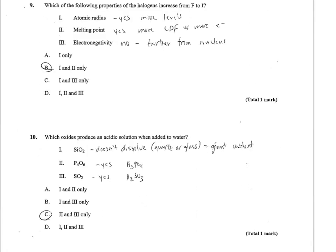Number 9 asks, which of the following properties of the halogens increase from fluorine to iodine? This is group 7A, our smallest, most reactive nonmetals, with fluorine being the smallest in the upper right, and then energy levels being added. Atomic radius, yes, that does increase as you move down any family. Melting point, yes, for nonmetals, it increases as more electrons are available for London dispersion forces. Electronegativity, no, that would decrease as the size increases. There will be less attraction by the nucleus for a shared pair. So B, 1 and 2 only.